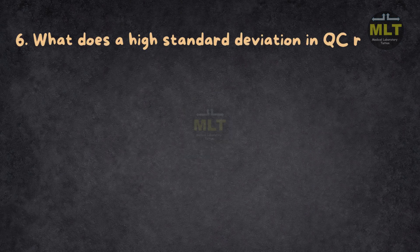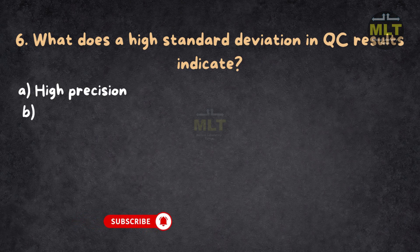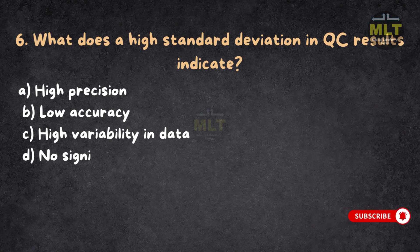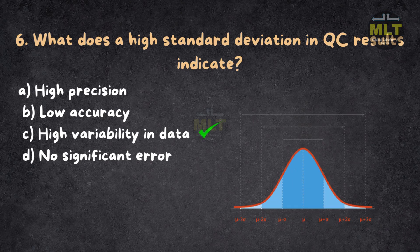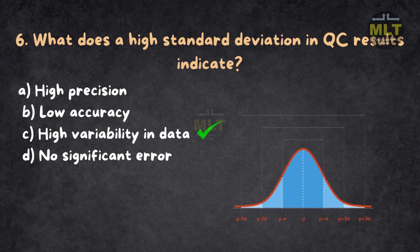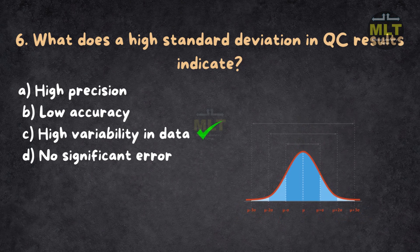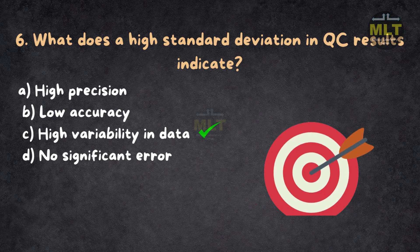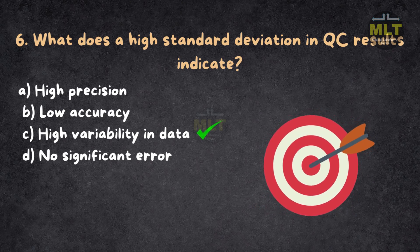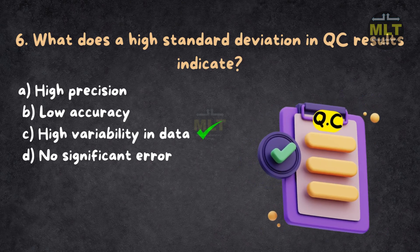Question 6: What does a high standard deviation in QC results indicate? a. High precision. b. Low accuracy. c. High variability in data. d. No significant error. Correct answer: c. High variability in data. A high standard deviation suggests that repeated test results show significant variation. This indicates low precision, requiring corrective action. Accuracy refers to closeness to the true value, which may or may not be affected. QC aims to minimize variability.